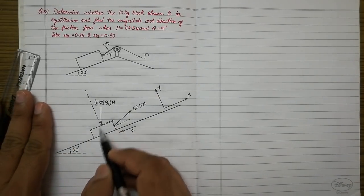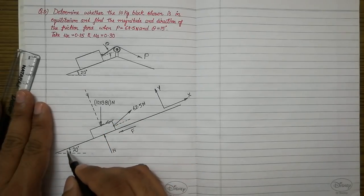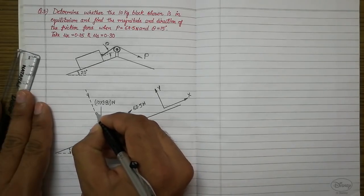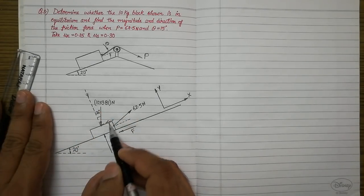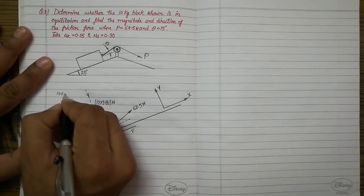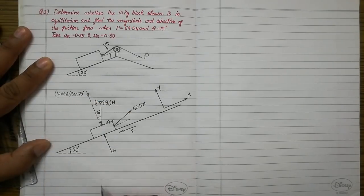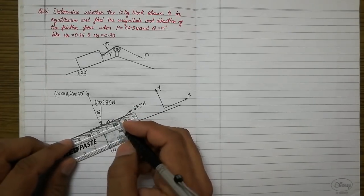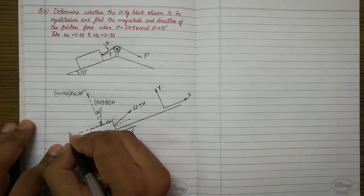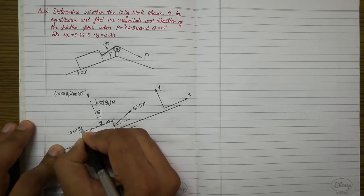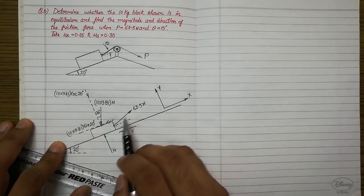Since the arrowhead of weight points toward the point of application, the two components also point toward it. If this angle is 20 degrees, by geometry this angle is also 20 degrees. So the y-axis component becomes 10 × 9.81 × cos 20 degrees, and the x-axis component becomes 10 × 9.81 × sin 20 degrees.